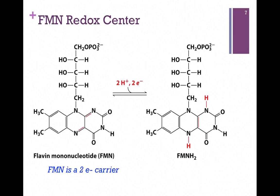Let's look at some of those redox centers. Here's flavin mononucleotide. The oxidized form is on the left. It can receive two electrons and two protons to form FMNH2, the reduced form, on the right.